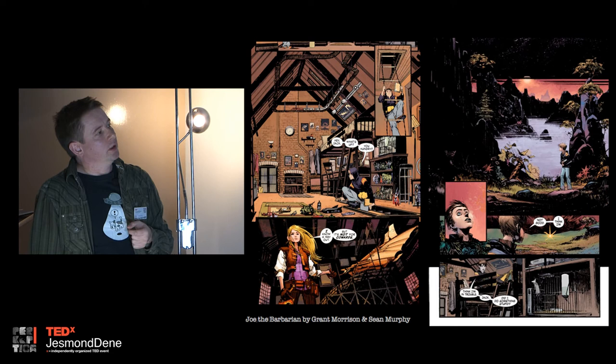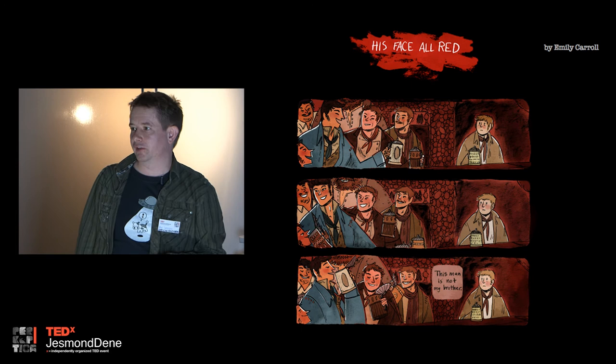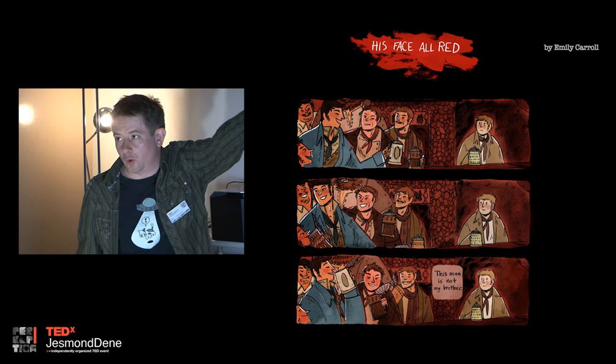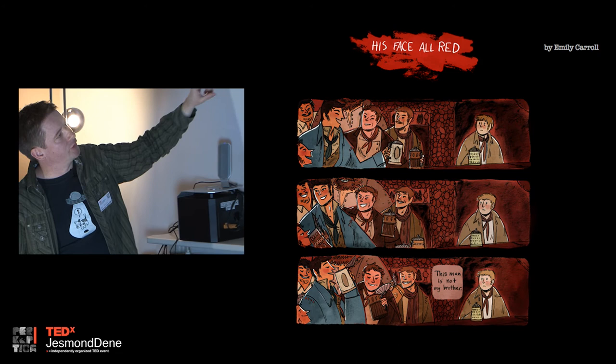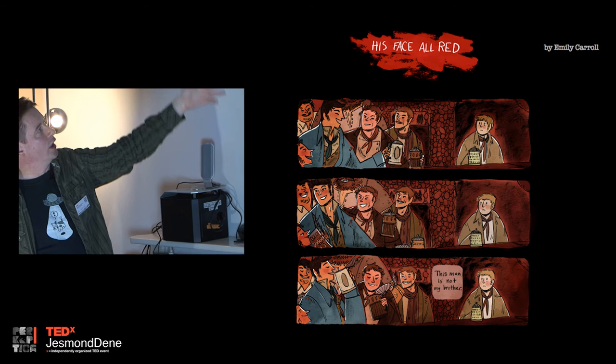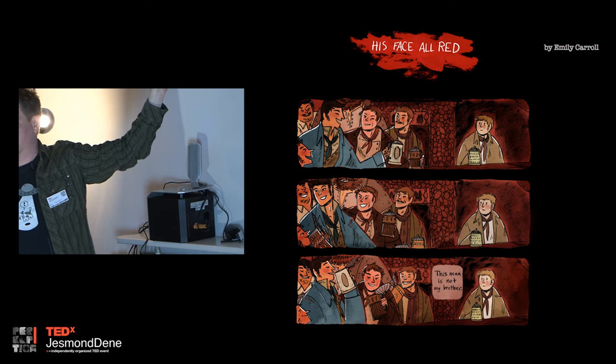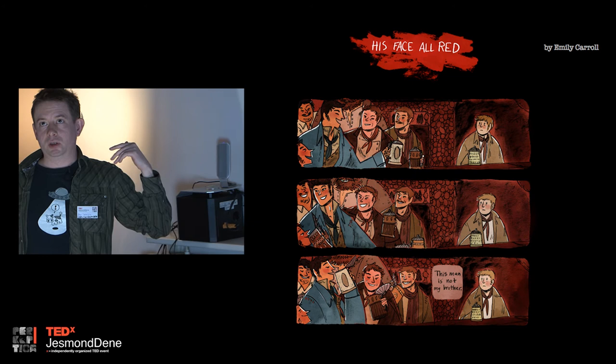This is a webcomic called His Face All Red by Emily Carroll, and it does some interesting things with time. It repeats the same panel frequently and has wide panels set on a dark field. The fact that these panels are silent means you're not quite sure whether the scene is taking place over three hours, three days, or three weeks. We don't know how long the guy on the left has been holding court, or how long the guy on the right has been looking at him like he doesn't quite trust him. Wide panels like that are used quite frequently in comics to extend time — it can be an indefinite time period.